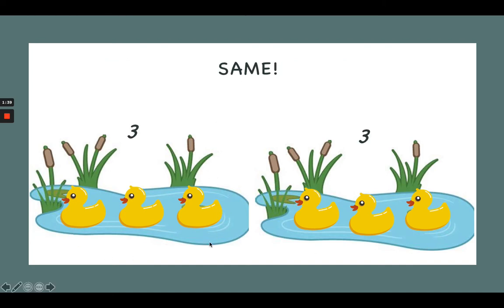We're going to count how many ducks are in pond 1. Let's count: 1, 2, 3. There are 3 ducks in pond 1. Now let's look at pond 2. Count: 1, 2, 3. There are 3 ducks in pond 2. That means pond 1 and pond 2 have the same amount of ducks. Well done.